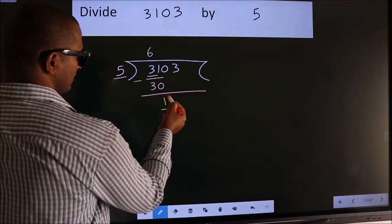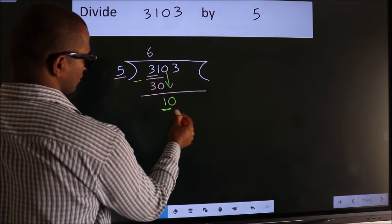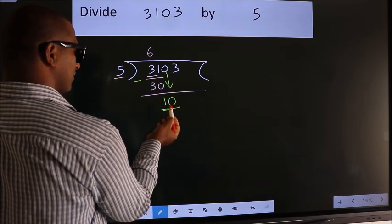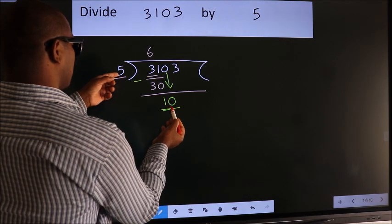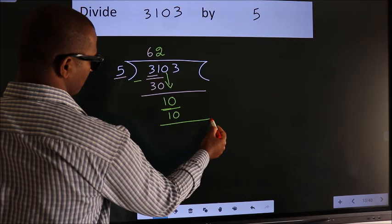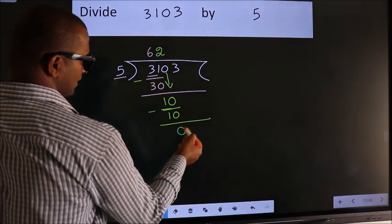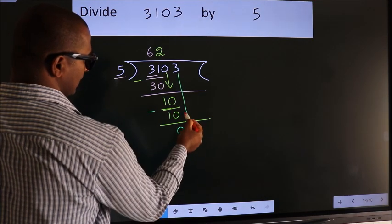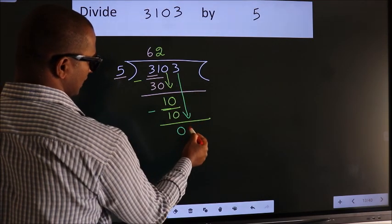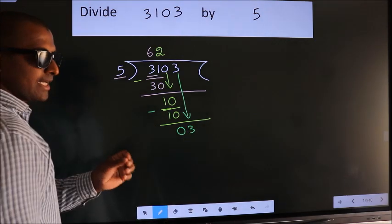After this, bring down the beside number. So 0 down, so 10. When do we get 10 in the 5 table? 5×2=10. Now we should subtract, we get 0. After this, bring down the beside number, so 3 down. After this step, the mistake happens.